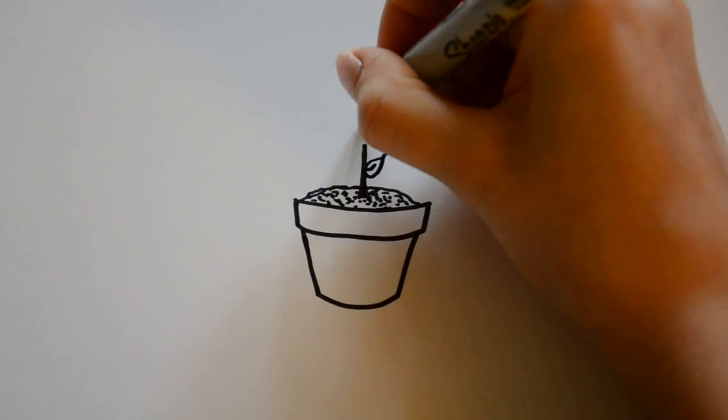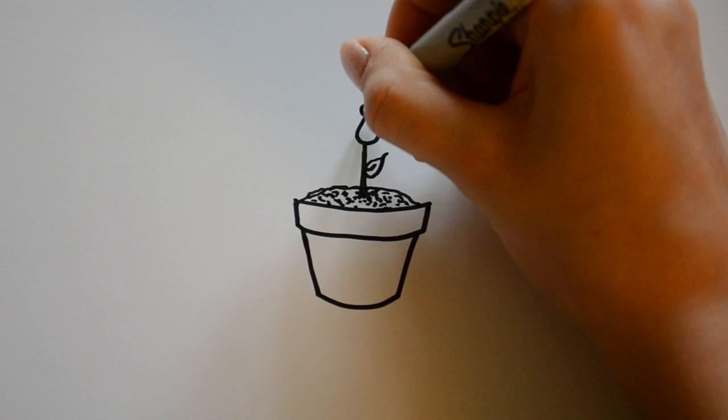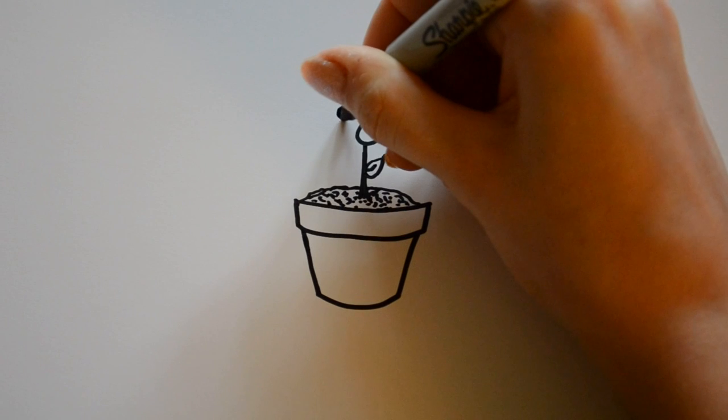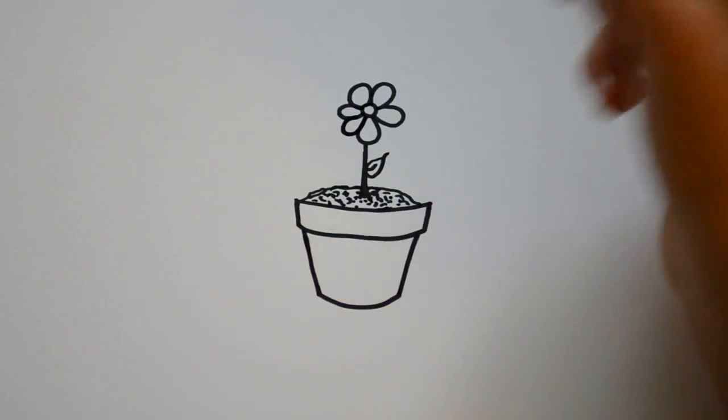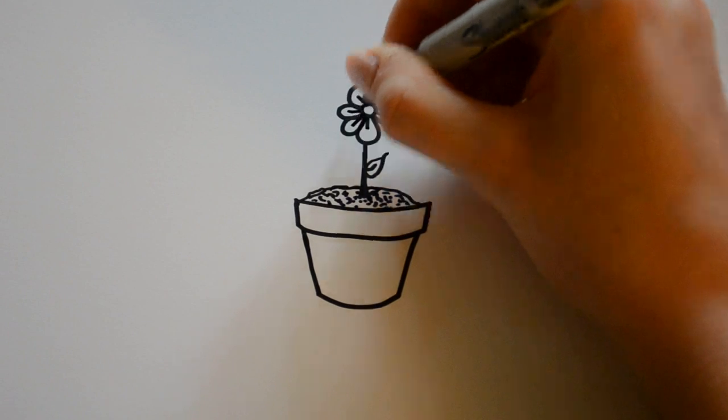And then for the flower I'm going to draw the petal first, and then I'm going to draw the inside. So that way I can just add all the petals coming from the inside like that. And there you go. And then for detail I'm going to draw just one line in each of the petals.